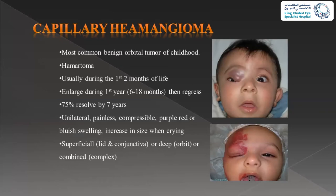Moving to vascular tumors, capillary hemangioma is very common — the most common benign orbital tumor of childhood. It usually does not present immediately after birth but starts in the first or second month of life, with a progressive course of enlargement lasting about a year and a half, then it starts to regress. Classically, 75% resolve within seven years. It has many different presentations.